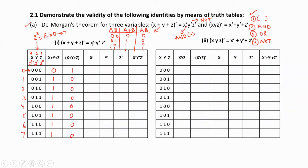For the RHS part, we first perform the complement of each variable: x̄, ȳ, z̄, then perform the AND operation. x̄ means complement of x, so 0s become 1s and 1s become 0s.